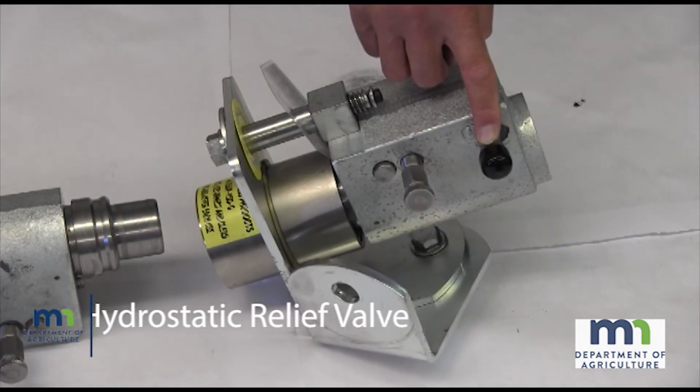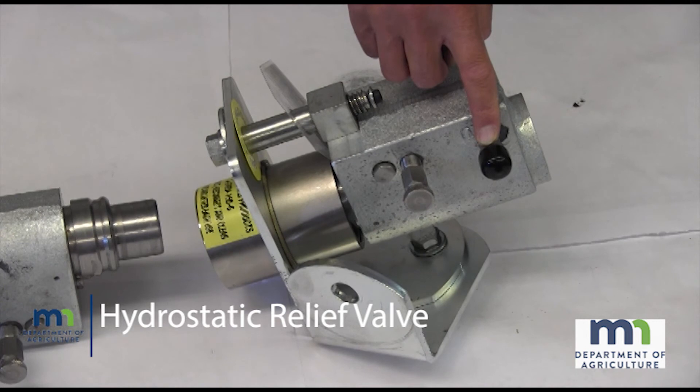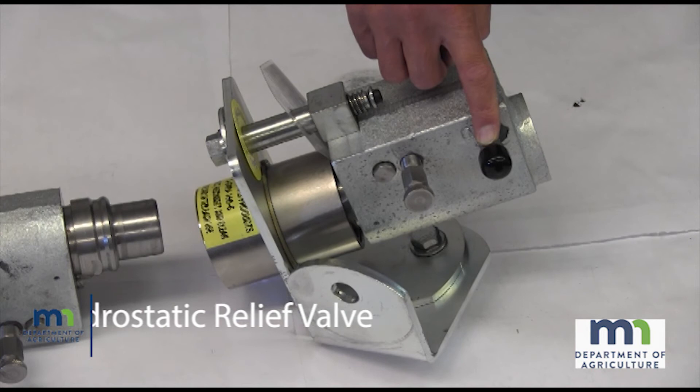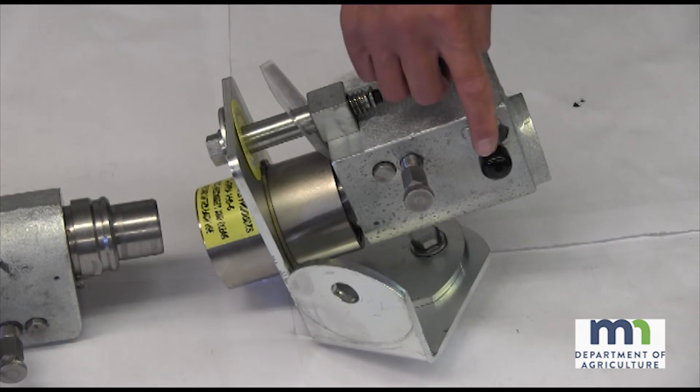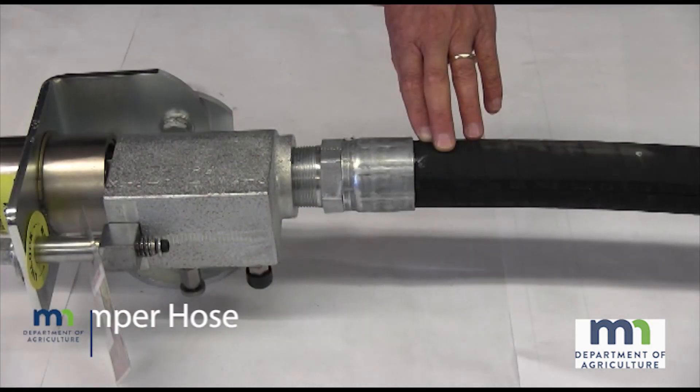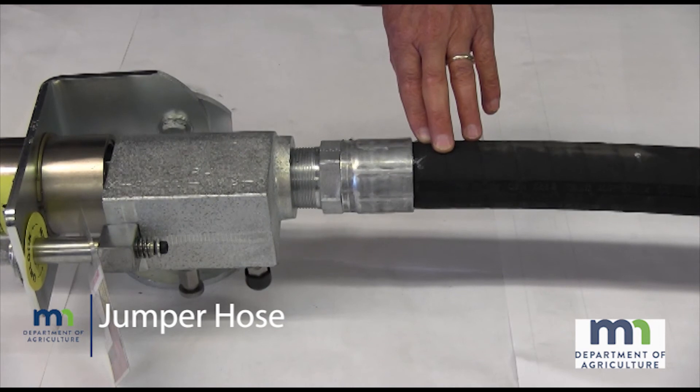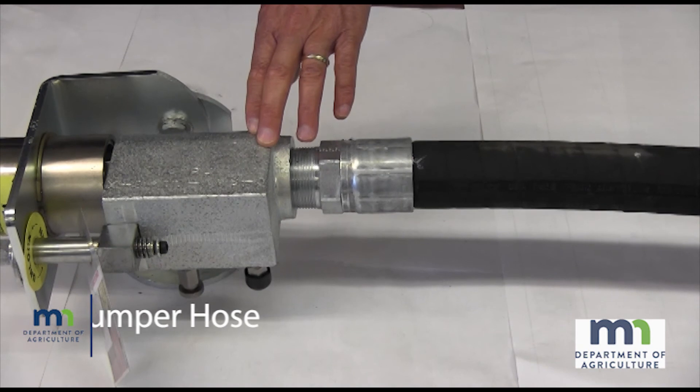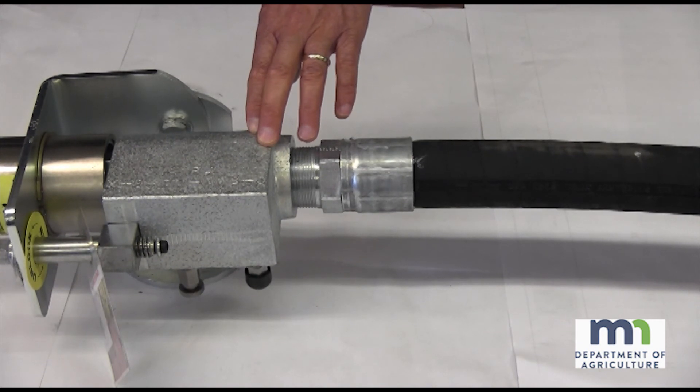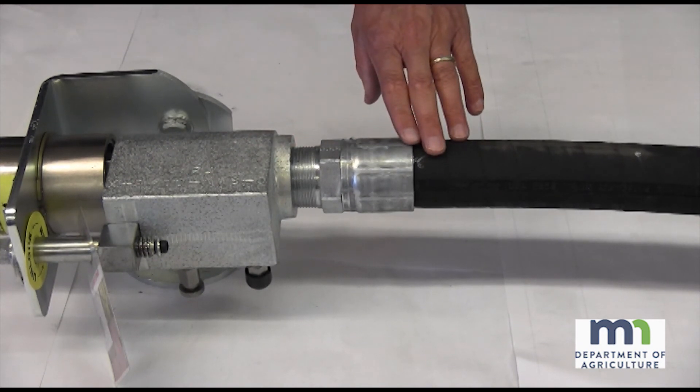One 350 to 400 PSI ammonia rated hydrostatic relief valve equipped with a rain cap. Jumper hose. This is the hose that is installed between the discharge end of the breakaway coupling device and the application unit.